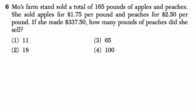All right, this is a systems of equations question, and that means that there's multiple parameters to the problem. We set it up and solve for the variables. Mo's farm sold a total of 165 pounds of apples and peaches. That's our first parameter. The apples and peaches, the pounds of apples and peaches, equals 165.